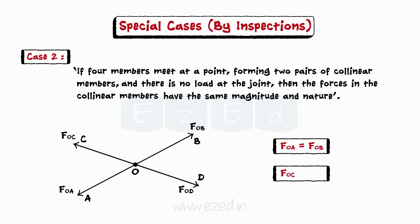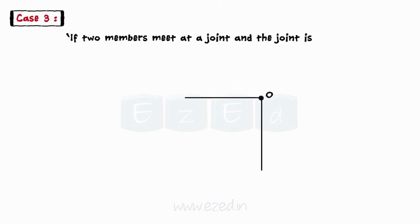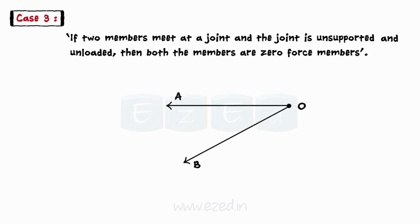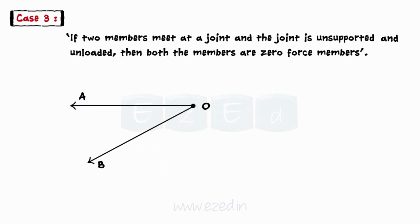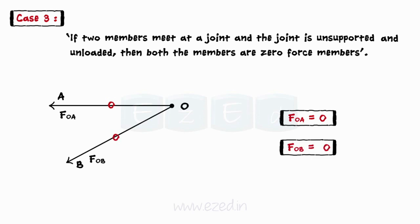If two members meet at a joint, and the joint is unsupported and unloaded, then both the members are zero-force members. For example, the diagram shows a joint formed by two members OA and OB. Joint O is unsupported and no load acts on it. Therefore, by special case 3, we can conclude that forces in both OA and OB are zero in magnitude.